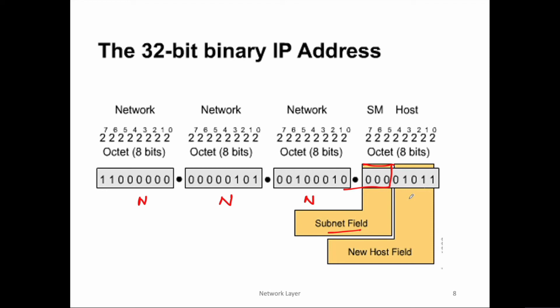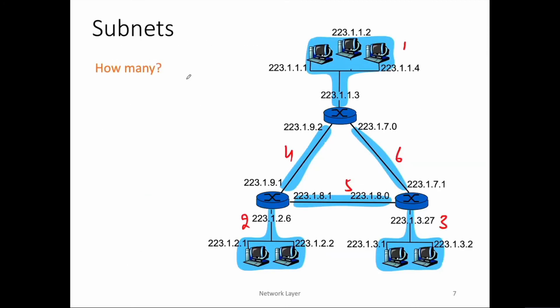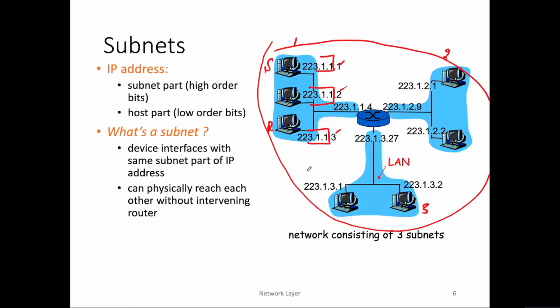Before we discuss how subnetting is implemented, let's talk about a very important concept: the subnet mask. You can call it an extended network prefix. It's not an address itself, but it acts as a filter — when applied on an IP address, it gives us the network address. For example, if data is coming to this boundary router from another router connected to the internet...